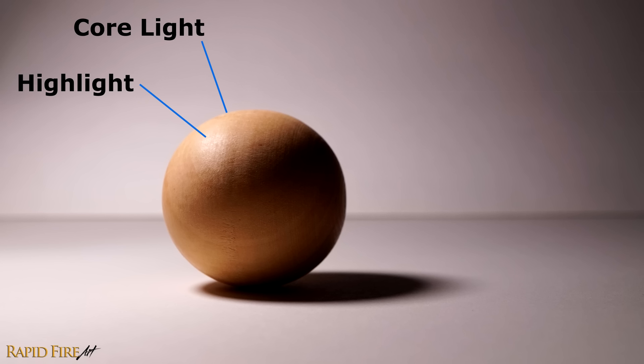The edges can appear soft on matte surfaces, like this wooden ball, or hard on shining surfaces such as a plastic ball. And as unintuitive as it seems, the highlight can change position depending on where you're standing.